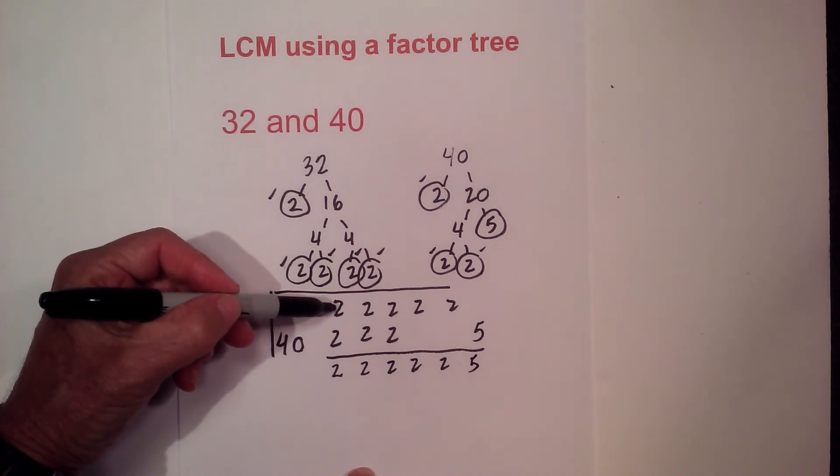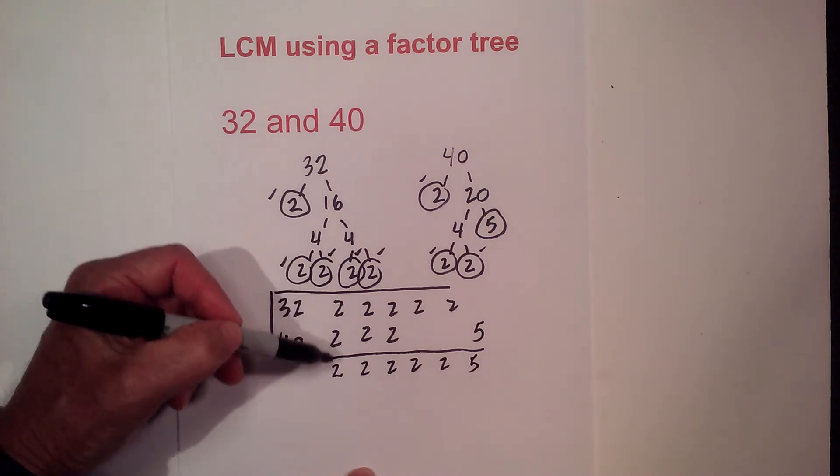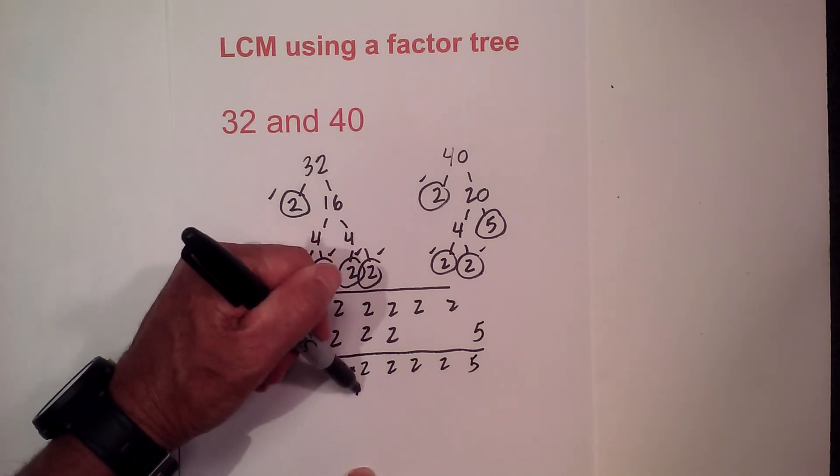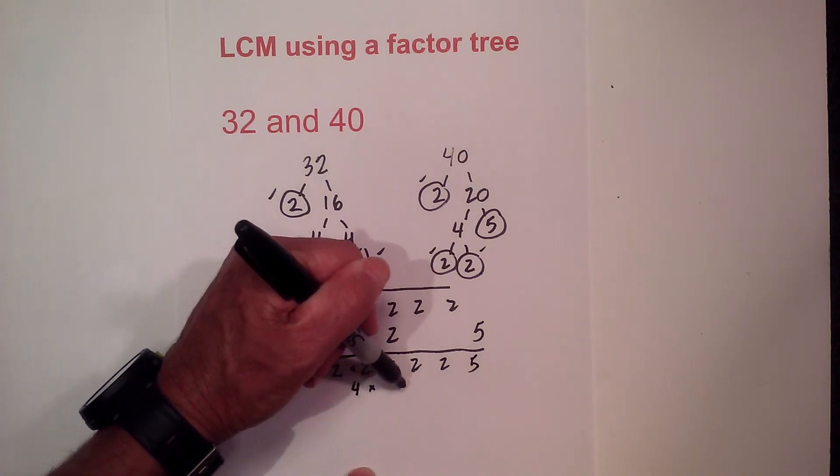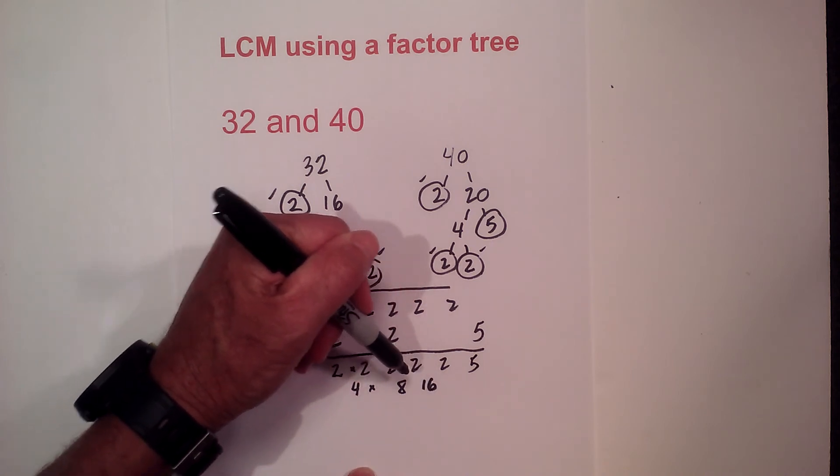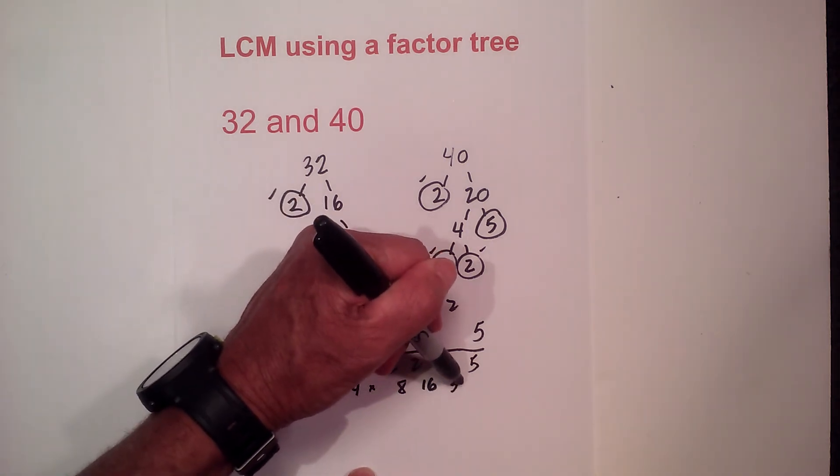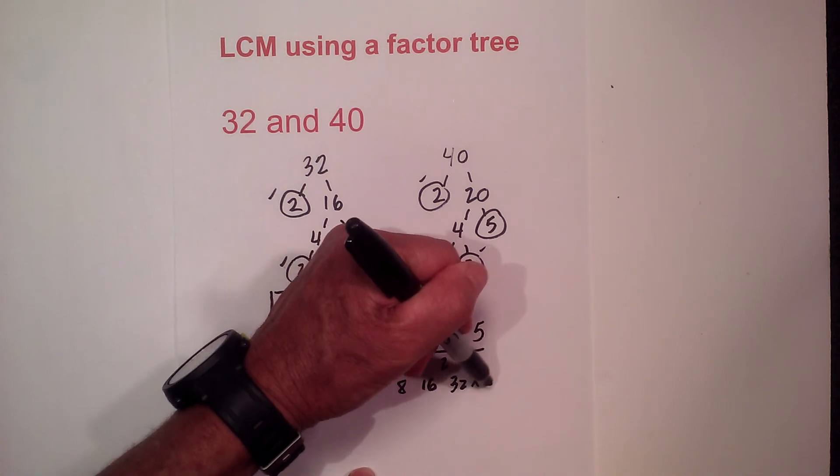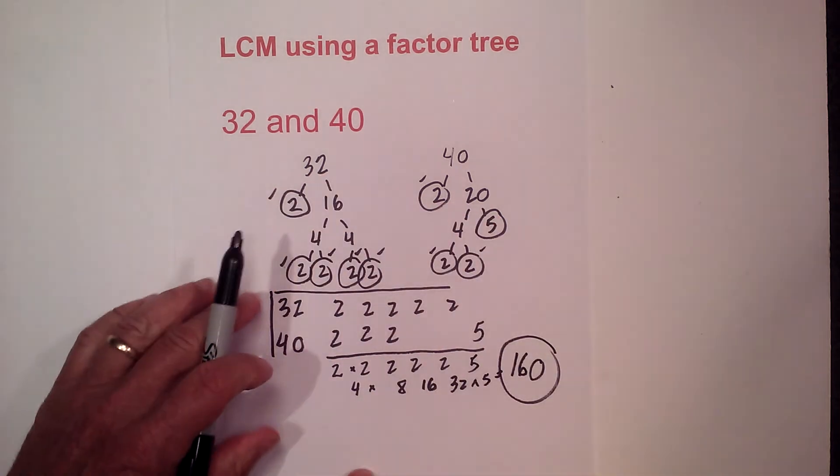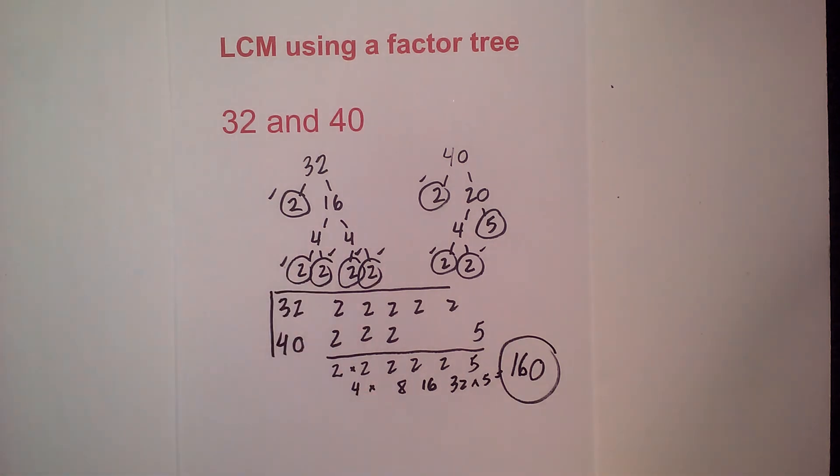Again notice that although I had a pair I only used one number. Then I just multiply each of these. 2 times 2 is 4 then times 2 is 8 times 2 again is 16, then times 2 again is 32 and 32 times 5 equals 160. So the LCM of 32 and 40 equals 160.